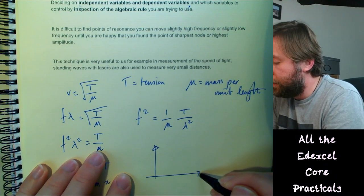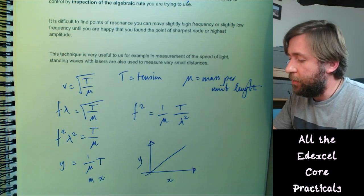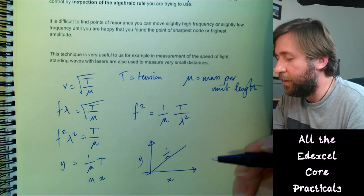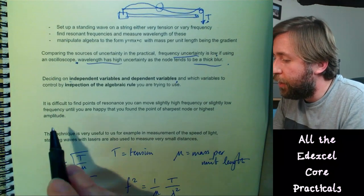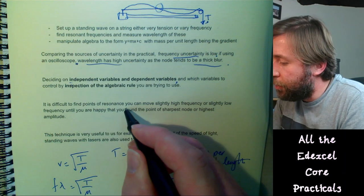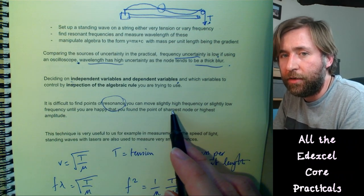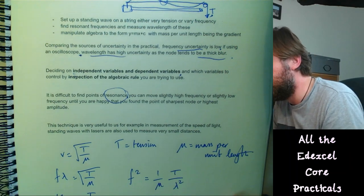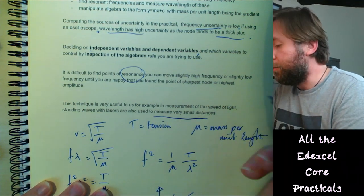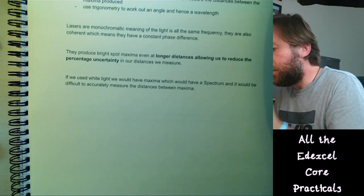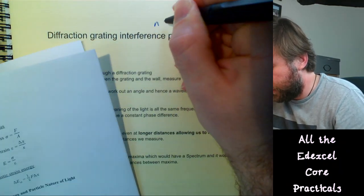It's difficult to find the exact points of resonance. The technique is to move slightly above and below the resonant frequency and find the point of sharpest node or highest amplitude — maximum amplitude being maximum resonance. This technique with standing waves is also used in precision measurements of very small distances, such as in laser manufacturing of very tiny components.